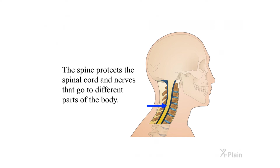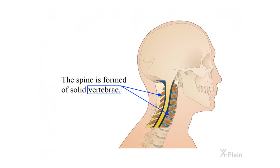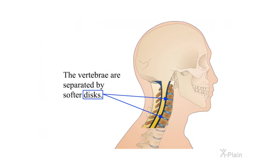Anatomy. The spine protects the spinal cord and nerves that go to different parts of the body. The spine is formed of solid vertebrae, and the vertebrae are separated by softer discs.